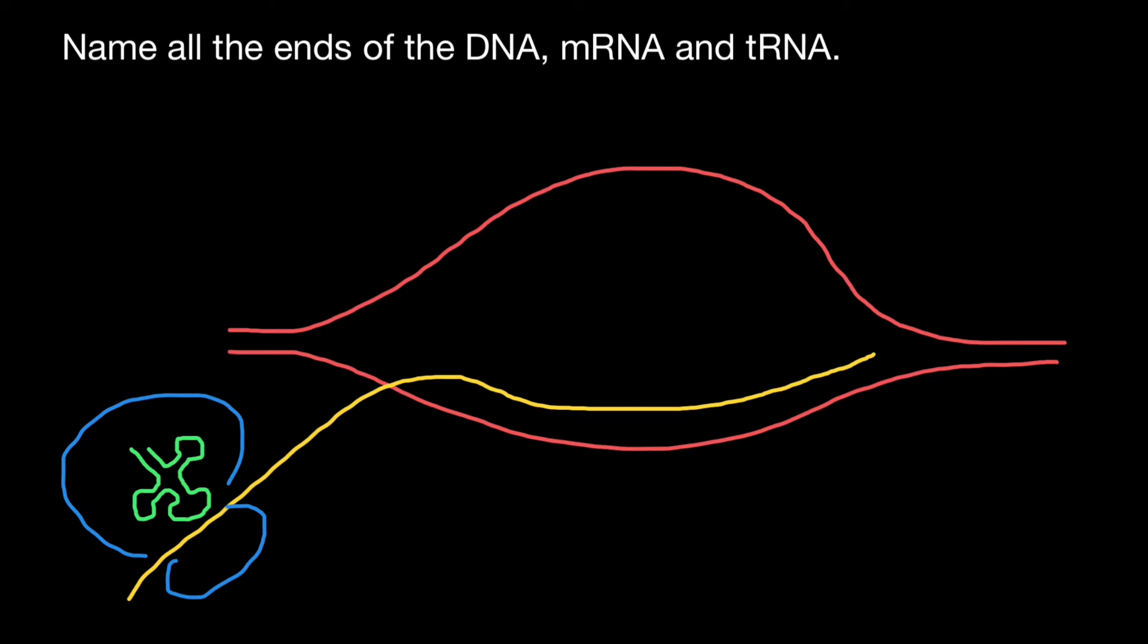In order to solve this problem, all you have to know is that messenger RNA is always synthesized from five prime end to three prime end. So in this direction, this end is going to be five prime end, and this is going to be three prime end.